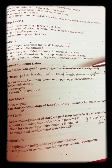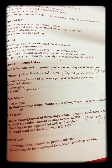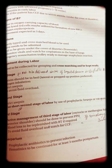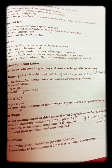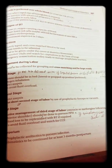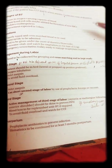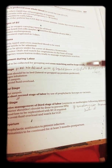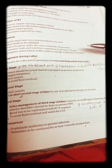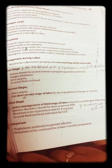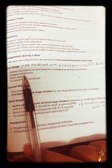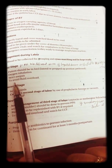Management during labor: anemia should be corrected; grouping and cross-matching to be done and blood kept ready. In the first stage, patient should not be delivered in homes or where facilities for management of complicated cases are lacking — patient must be shifted to a primary health care center where proper facilities are available. The patient should be in left lateral position with proper oxygen inhalation and strict asepsis.